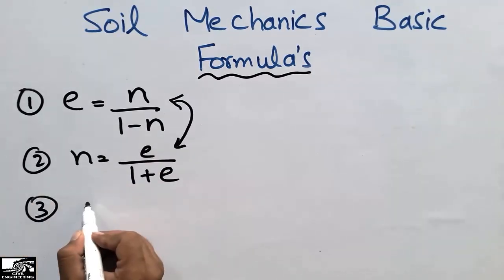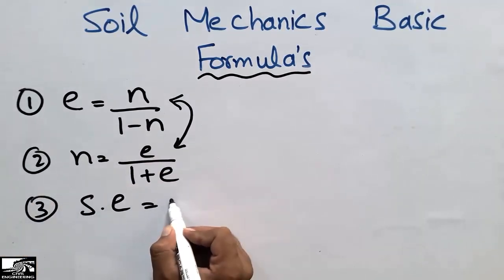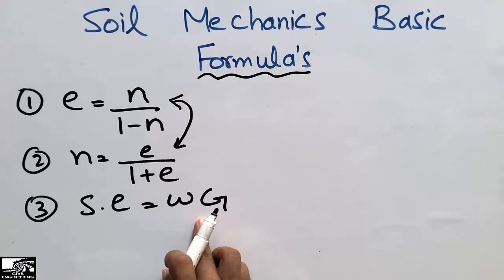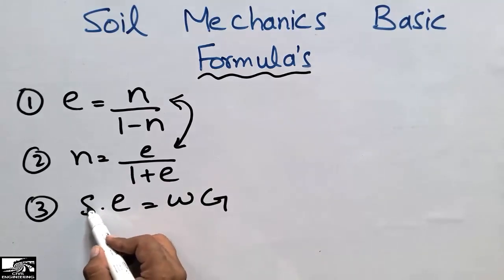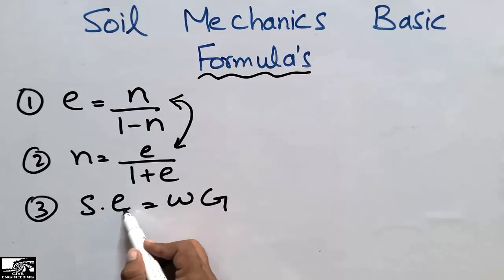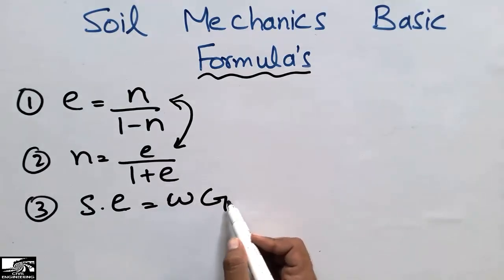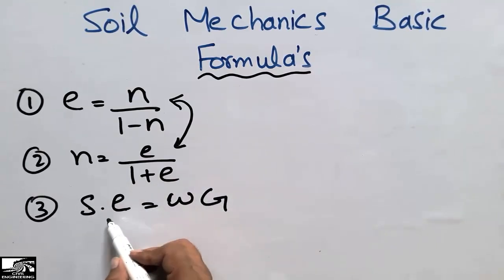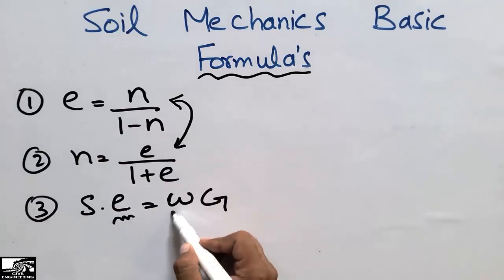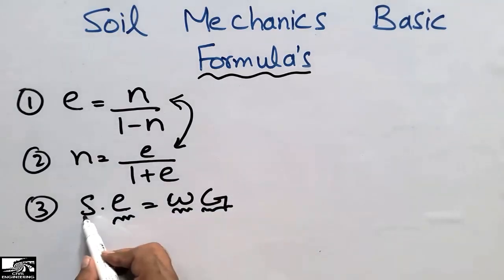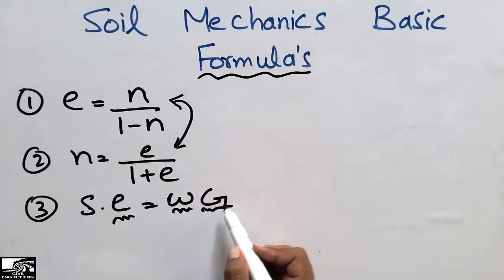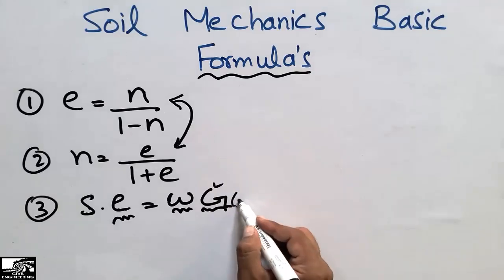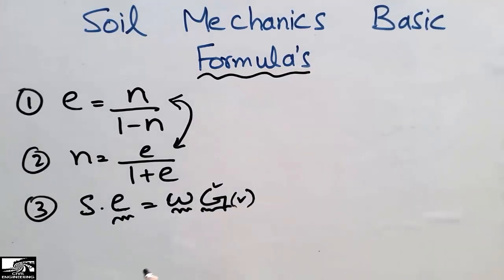The third formula is S·e = w·G, which is mostly used in soil mechanics. Here S is the degree of saturation, e is the void ratio, w is the water content, and G is the specific gravity. If three of these four parameters are known, we can find the fourth — for example, the degree of saturation or the specific gravity.